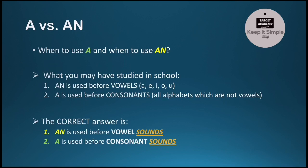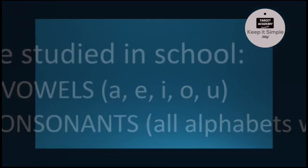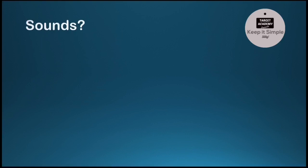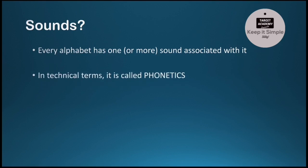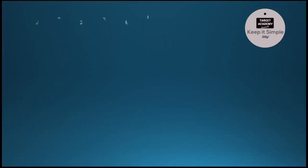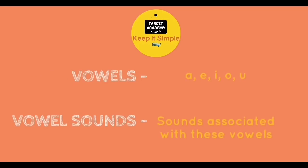Now the correction: AN is used before vowel *sounds*, and A is used before consonant *sounds*. The important word is not vowel or consonant — the important word is *sound*. Every alphabet has one or more sounds associated with it — this is called phonetics: the study of speech sounds. It's very interesting. The vowel sounds of A are 'a' or 'ay'; of E are 'a' or 'e'; of I is 'e' (surprisingly!); of O is 'aw' or 'o'; and of U is 'a'.